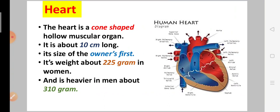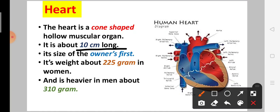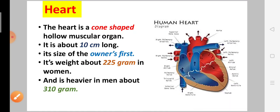Next, the heart. The heart is a cone-shaped, hollow muscular organ. It is a cone-shaped organ and the weight of the heart is approximately 310 grams.